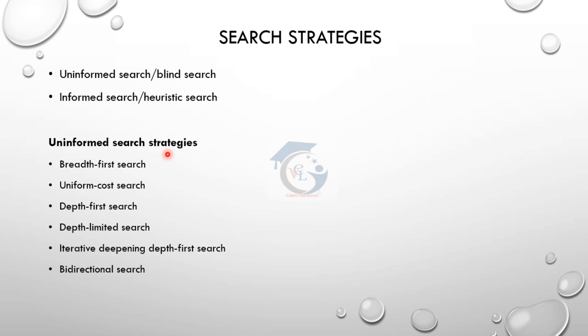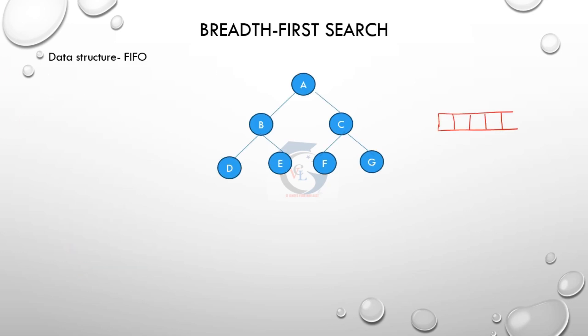For uninformed search strategies, we will see six different types one by one. First, we will see the concept of breadth-first search.